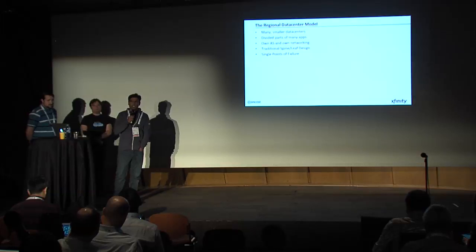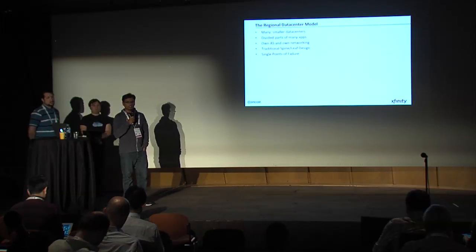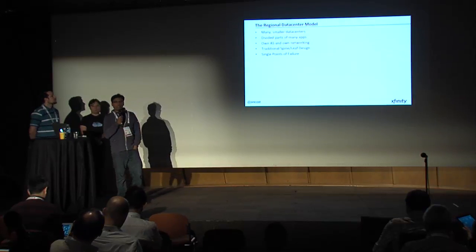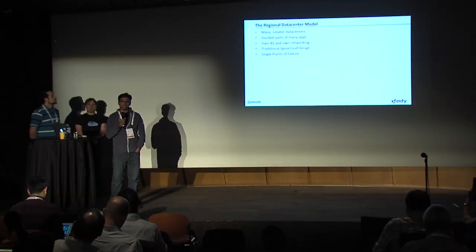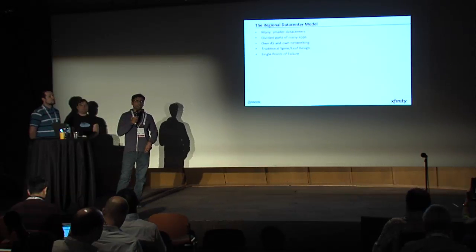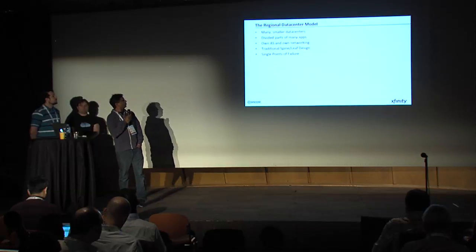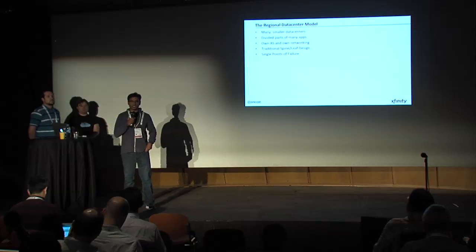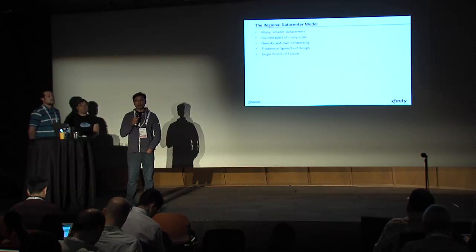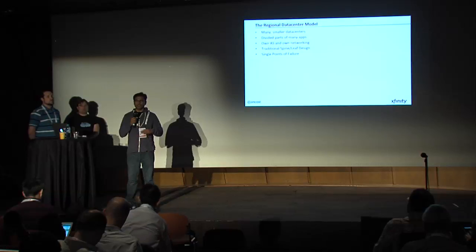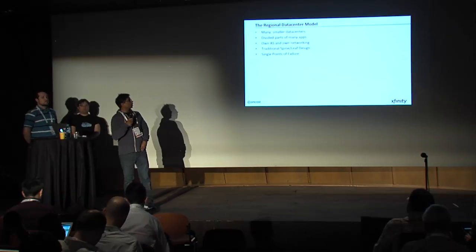Each regional data center has its own AS and networking. We have a traditional leaf-spine design with multiple racks of servers with their own top-of-rack switch feeding into a single spine. We decided not to have a lot of redundancy in our regional data centers because we expect the application to be aware and for redundancy to move into the application layer.